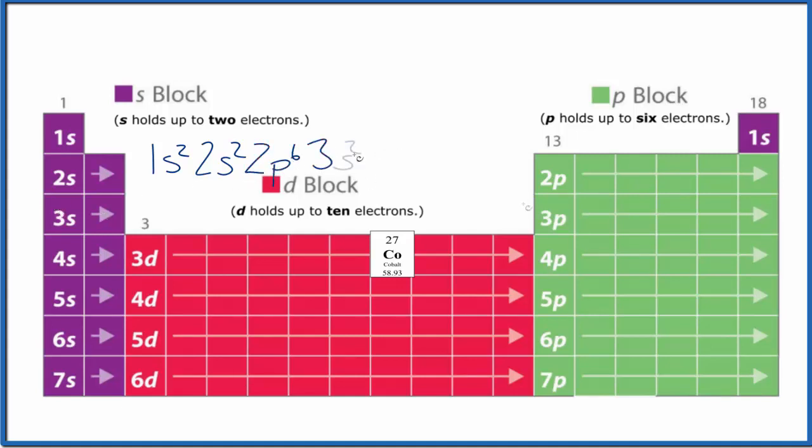3s1, 3s2. 3p6, 4s2. And finally, we have 3d. 1, 2, 3, 4, 5, 6, 7. So if you add these numbers here on top up, that gives you 27. So we have our electron configuration.